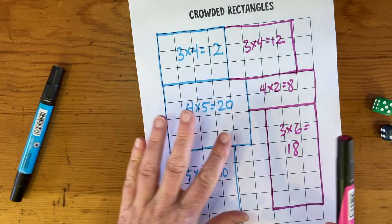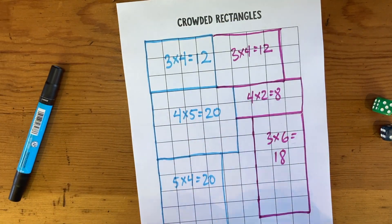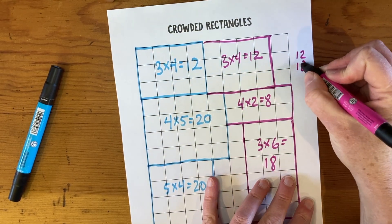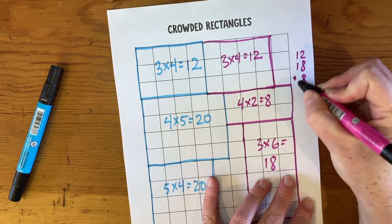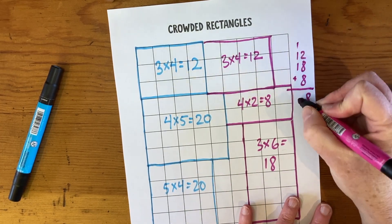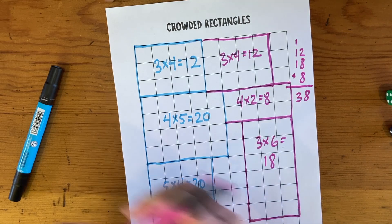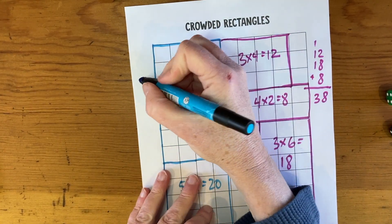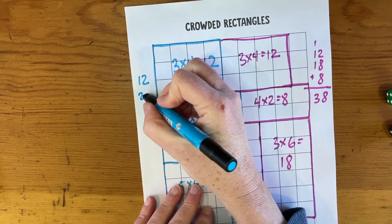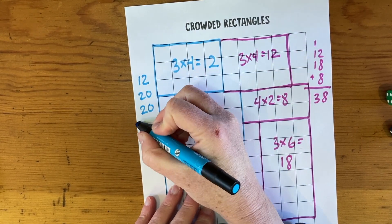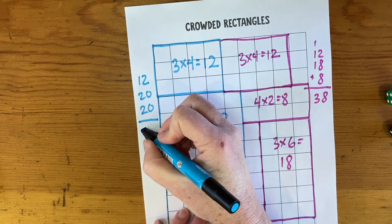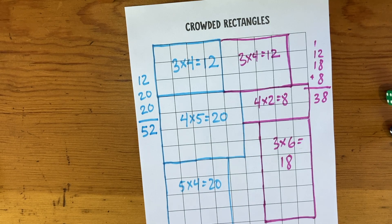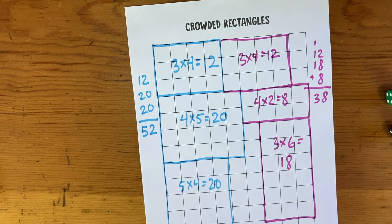So pink has 12 plus 18 plus eight, that's 38. And blue has 12 plus 20 plus 20 plus 20, which is 52. So blue wins that game, and that's how you play Crowded Rectangles.